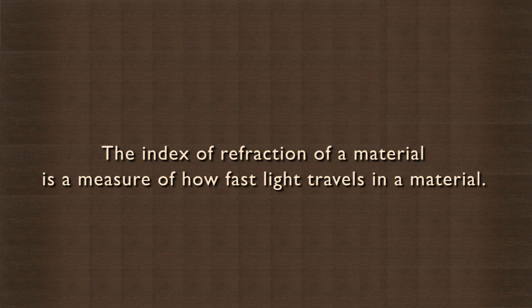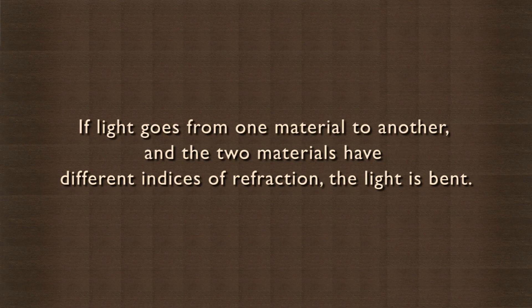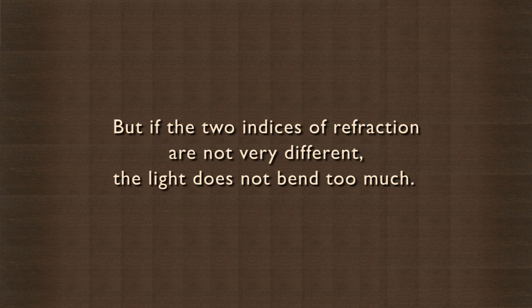The index of refraction of a material is a measure of how fast light travels in a material. If light goes from one material to another and the two materials have different indices of refraction, the light is bent. But if the two indices of refraction are not very different, the light does not bend too much.